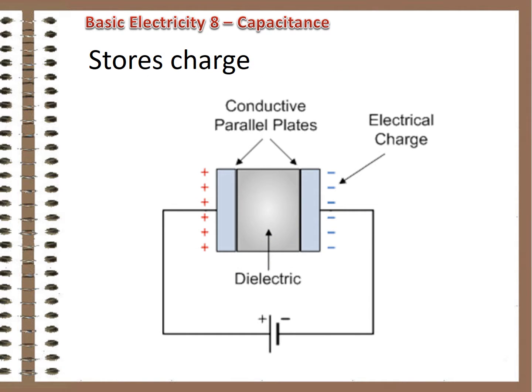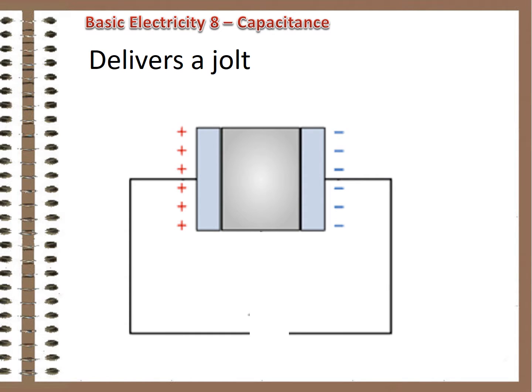When placed in a DC circuit, a capacitor acts to store charge. The battery voltage charges the plates of the capacitor to the same level as the battery itself. If the battery is disconnected, the stored charge remains on the plates of the capacitor.